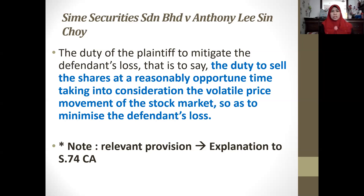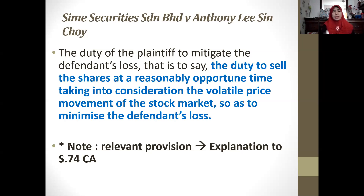Let's read through the Explanation to Section 74, which talks about mitigation. It states: in estimating the loss or damage arising from a breach of contract, the means which existed of remedying the inconvenience caused by the non-performance of the contract must be taken into account. The word 'mitigation' does not appear, but the essence is that it is on the part of the plaintiff to mitigate.